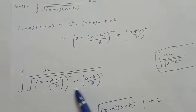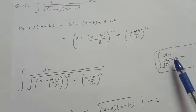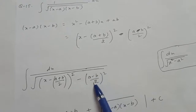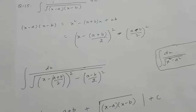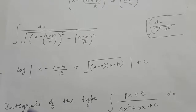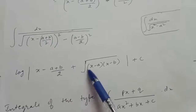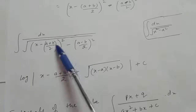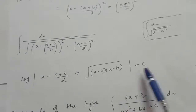This is of the form 1 upon root (x² minus a²) where x is the complete expression (x minus (a+b)/2) and a is (a-b)/2. So the answer is log |x minus (a+b)/2 + √((x minus (a+b)/2)² minus ((a-b)/2)²)| plus c.